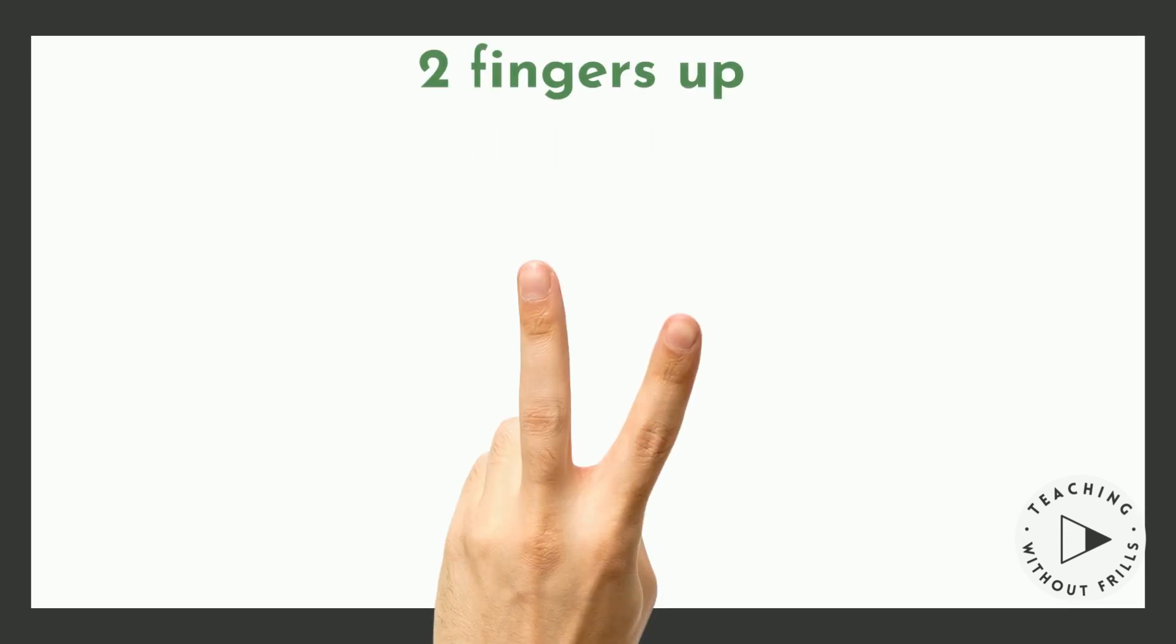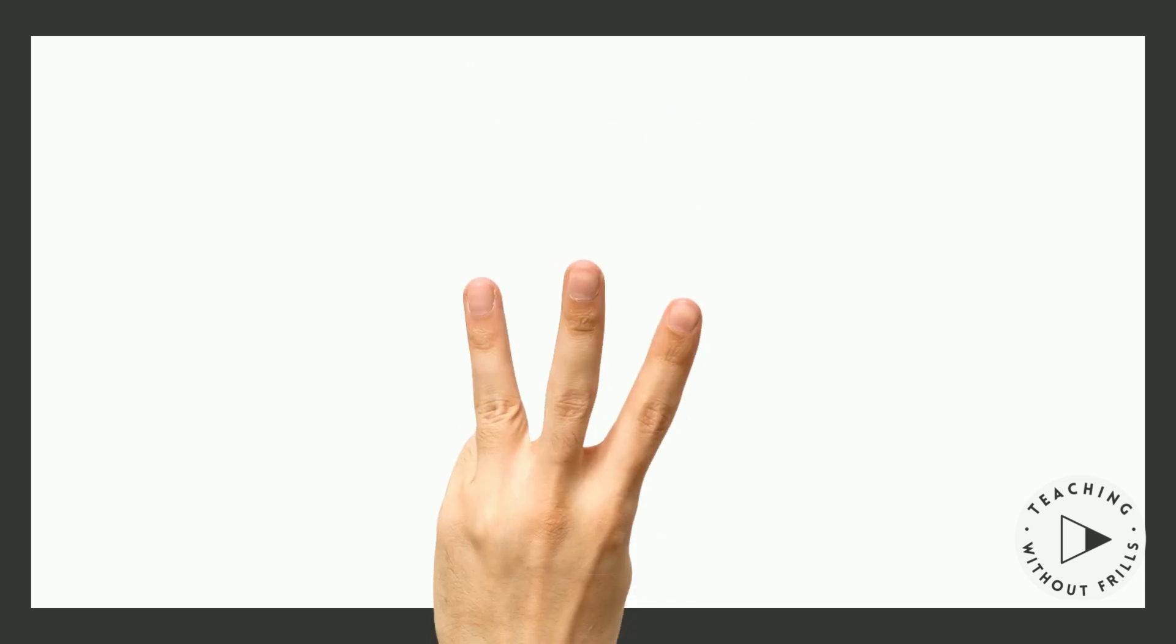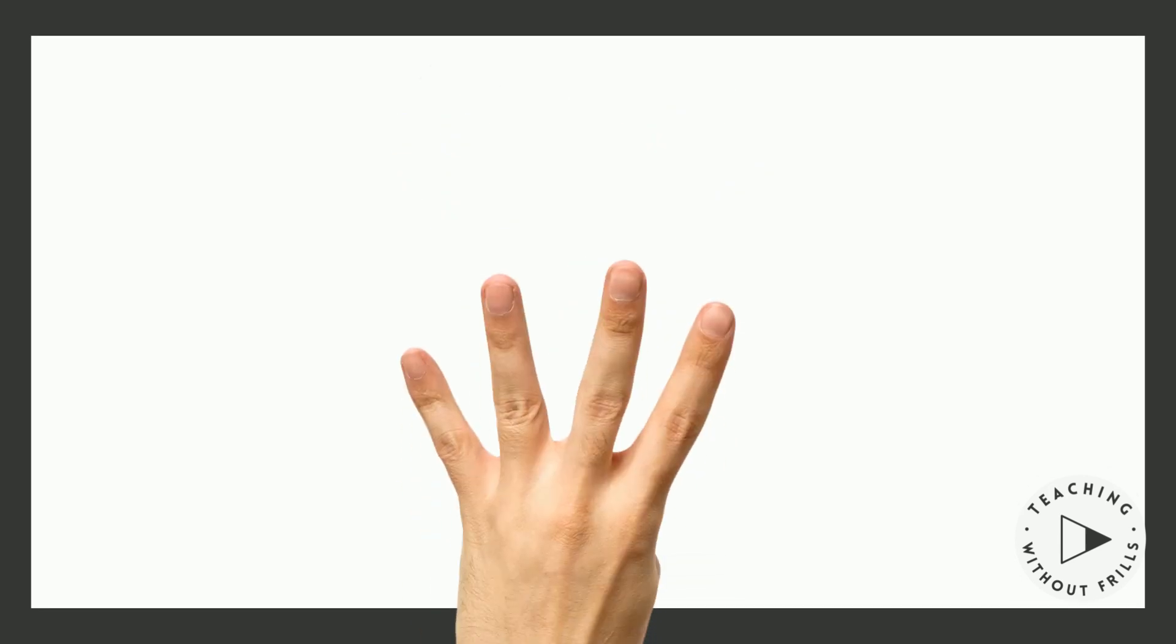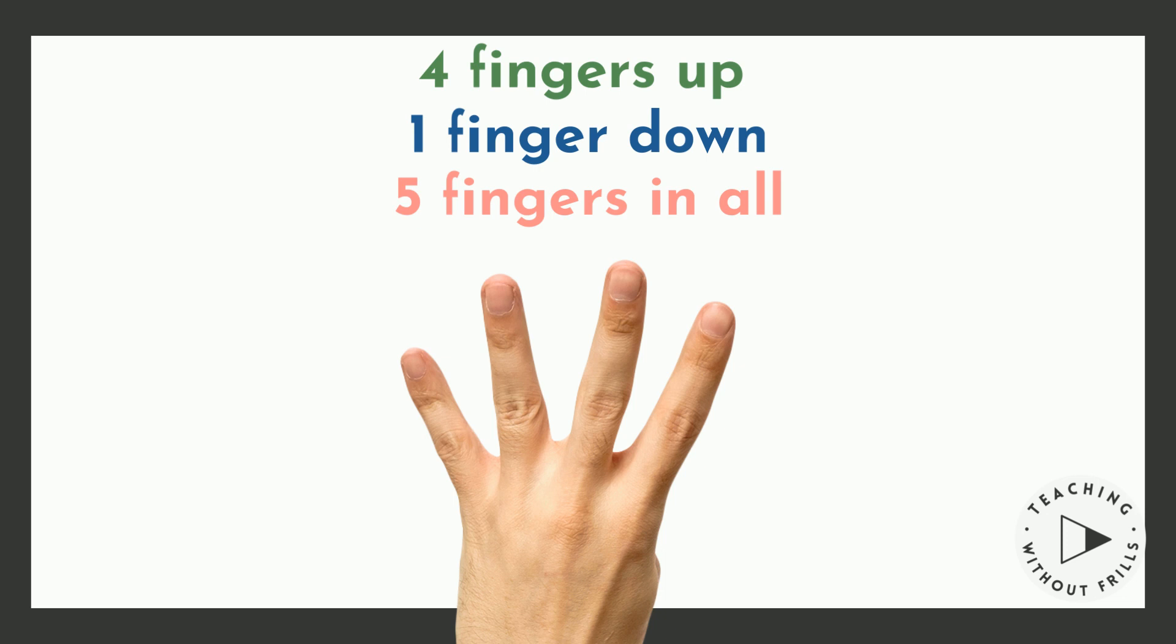Two fingers up and three fingers down is five fingers in all. Three fingers up and two fingers down is five fingers in all. Four fingers up and one finger down is five fingers in all.